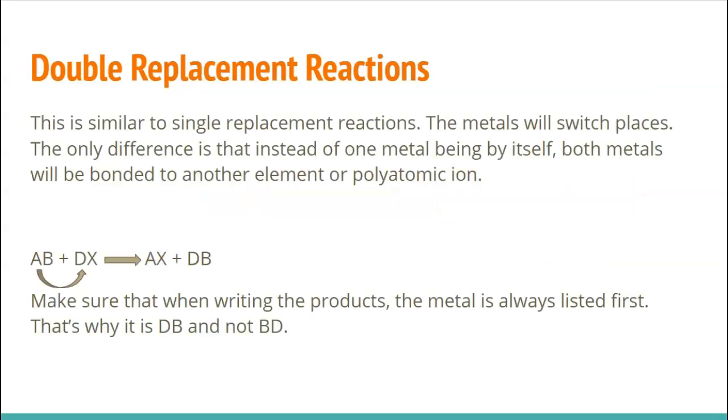And so what we're doing here is very similar to a single replacement where we had a metal switching place with a metal. But the only thing here is in a single replacement, one metal was by itself. And with double, nothing is by itself. So you're going to have a metal and a non-metal, or this could be a polyatomic ion, and a metal and a non-metal, or a polyatomic ion.